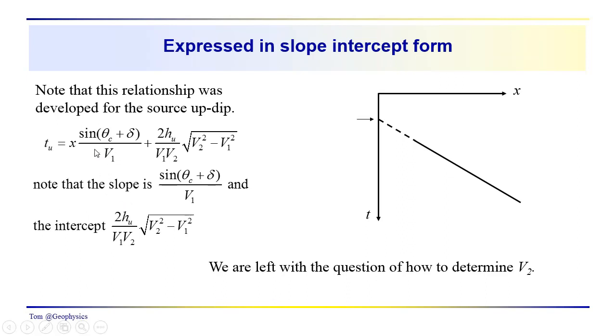So in the slope-intercept form, we have just reversed the order of these terms. So kind of a typical y equals mx plus b. We've got our slope here, sine theta critical plus delta. We have the intercept over here. So we know there is some critical distance beyond which we are not going to see a critical refraction; at distances a little bit closer to the source. The slope in this case is sine theta critical plus delta over V1. The intercept here is 2HU over V1 V2 square root of V2 squared minus V1 squared.